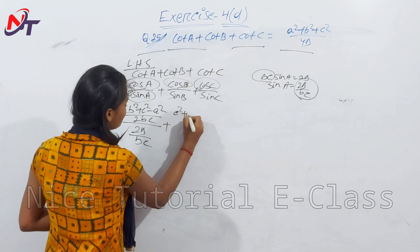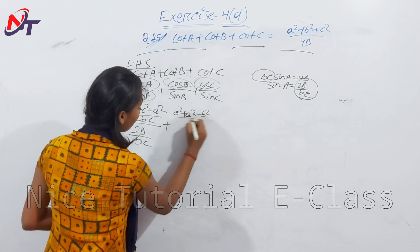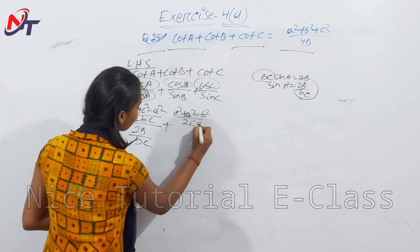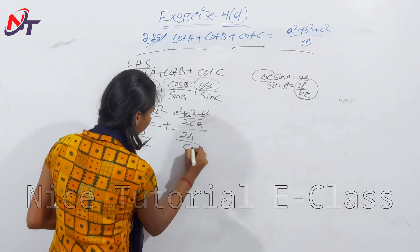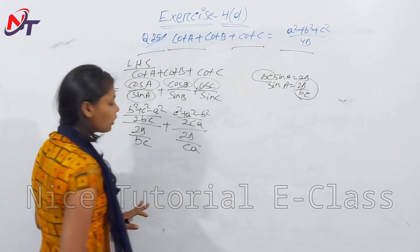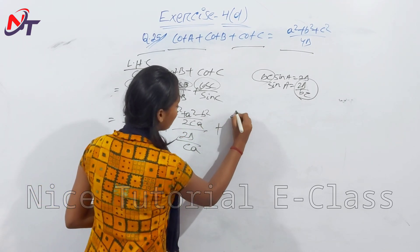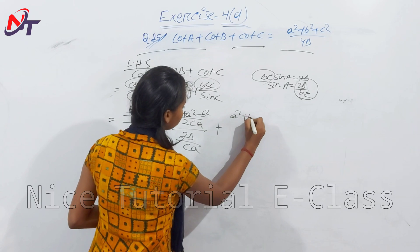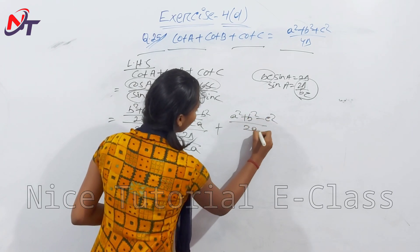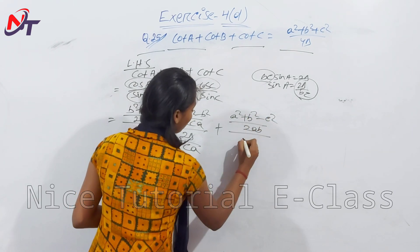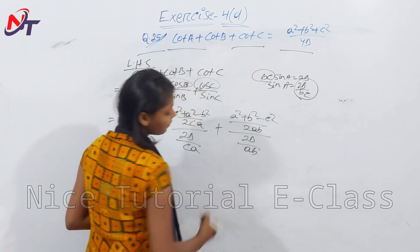Similarly, cot B = (c² + a² - b²)/(2ca) divided by 2Δ/(ca). And cot C = (a² + b² - c²)/(2ab) divided by 2Δ/(ab).